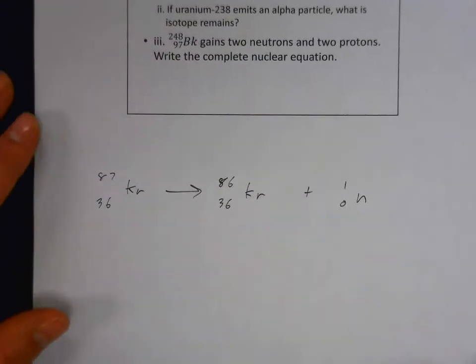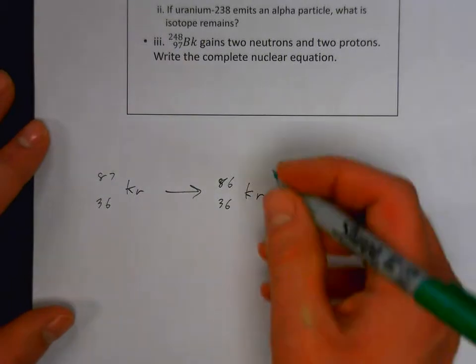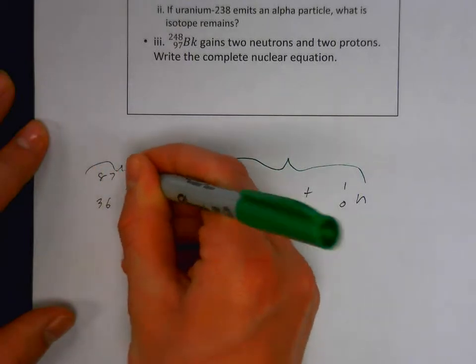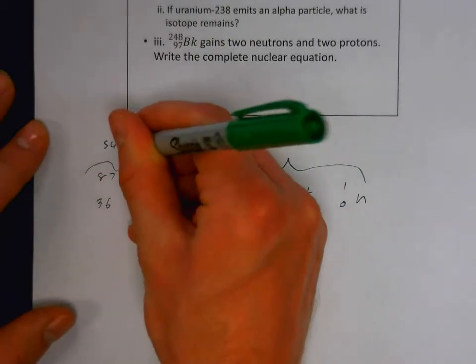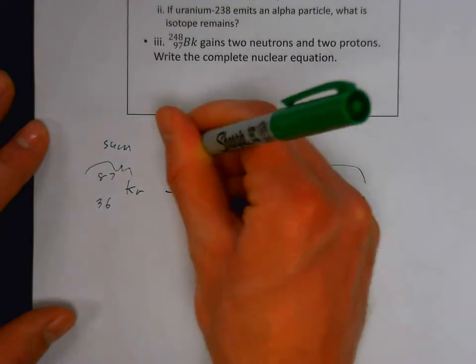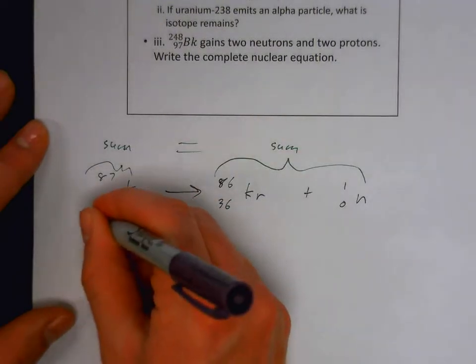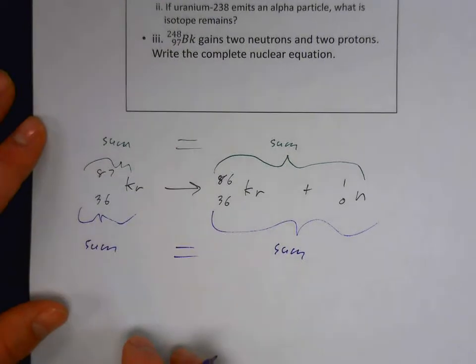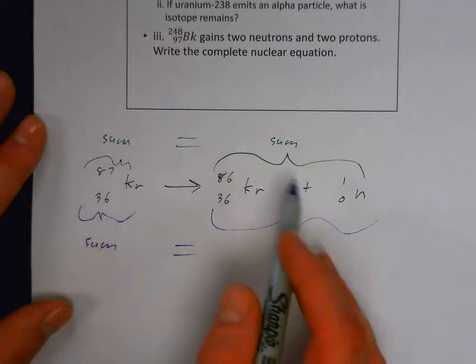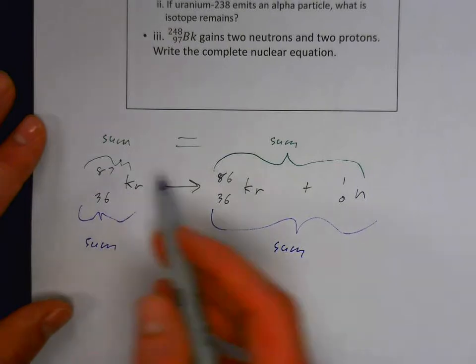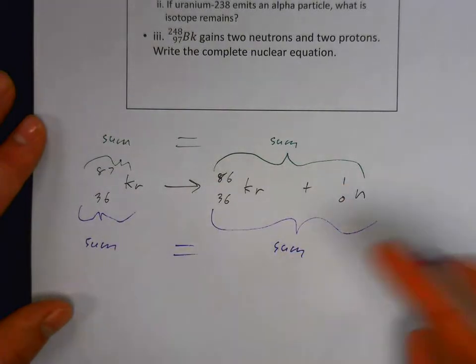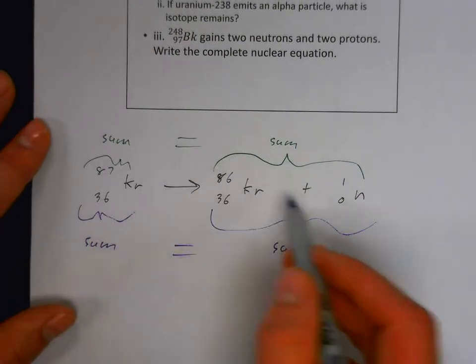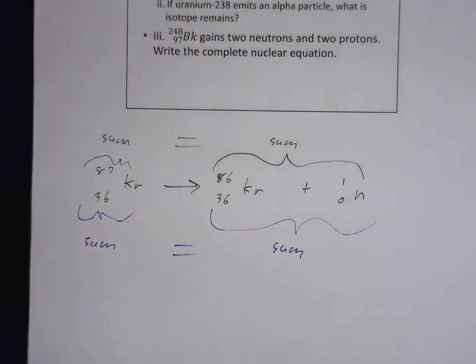Nuclear equations are similar to chemical equations in that the sum of the mass numbers and the sum of the atomic numbers are equal. Since mass is conserved, we can treat them in simple ways to figure out what particle might be missing from an equation as the nucleus changes throughout the nuclear reaction.